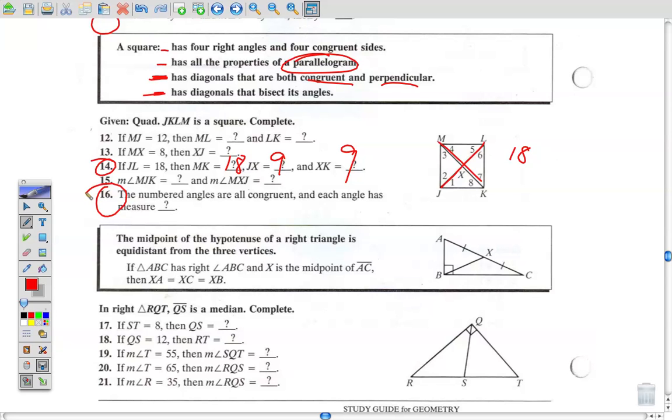Now number 16, the numbered angles are all congruent. So the numbered angles are all congruent, and each angle has a measure of what? Now, since it's a square, this angle right here is a 90-degree angle. But those angles are cut into, we're talking about the numbered angles. So what is each of those, what's this whole angle cut into? Two equal parts, because the diagonals bisect its angle. So you have two 45-degree angles. So what are the numbered angles? They're all 45.